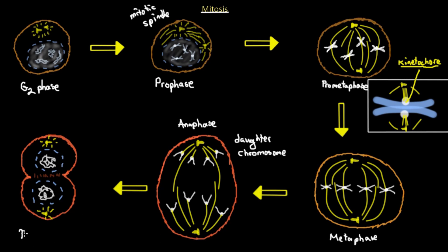The final stage of mitosis is telophase. In telophase, the chromosomes unfold and return to their interphase state. The daughter chromosomes are in compact folded form, but once pulled to each spindle pole they will unfold and return to their initial interphase state — just like they were in G2 phase — appearing as long chromosomes, as you would also see under the light microscope.